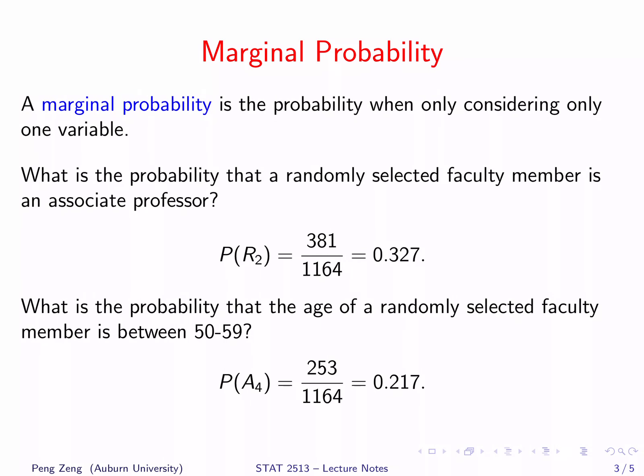We can define probabilities based on a contingency table. A marginal probability is the probability when only considering one variable. For example, what is the probability that a randomly selected faculty member is an associate professor? In this question, we only need to consider one variable: rank.